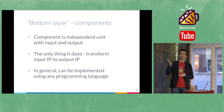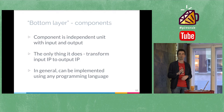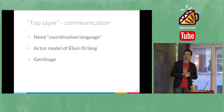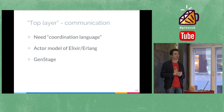The bottom layer consists of independent components. The only thing a component does is transform input data into output data — input IP to output IP. In general, a component is absolutely independent and can be implemented using any programming language. The top layer needs a so-called communication language. As you've already realized, Elixir and Erlang are very good languages for such communication — to be the communication language — because of the actor model of concurrency. In Elixir and Erlang, the main abstraction is a process, and an Elixir program is a set of independent processes that communicate with each other.